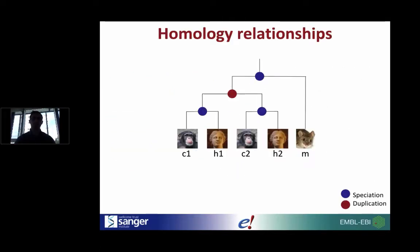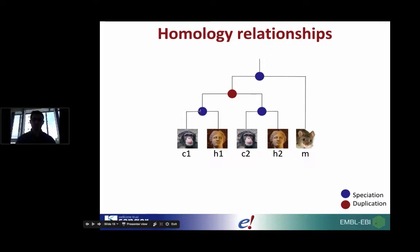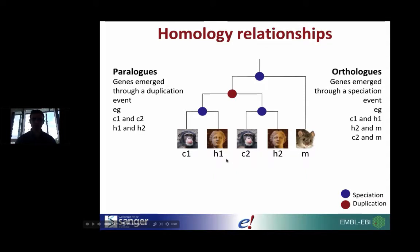Taking our gene trees, we make our homology predictions. This is a simplified version of a gene tree with human, chimpanzee, and mouse genes. The nodes indicate either a speciation event in blue or a duplication event in red. The first type of homolog is an ortholog — genes that have emerged through speciation events. For example, comparing gene C1 to H1, the closest route is through the blue speciation node, so these are orthologs.